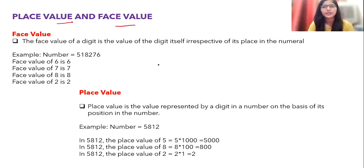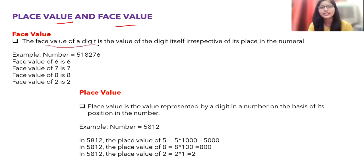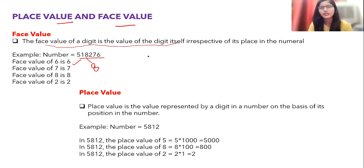The face value of a digit is the value of the digit itself, irrespective of its place in the number. No matter which position it is in — ones, tens, hundreds — the face value is always the digit itself. For example, in the number 518276, the face value of 6 is 6 and the face value of 8 is 8.